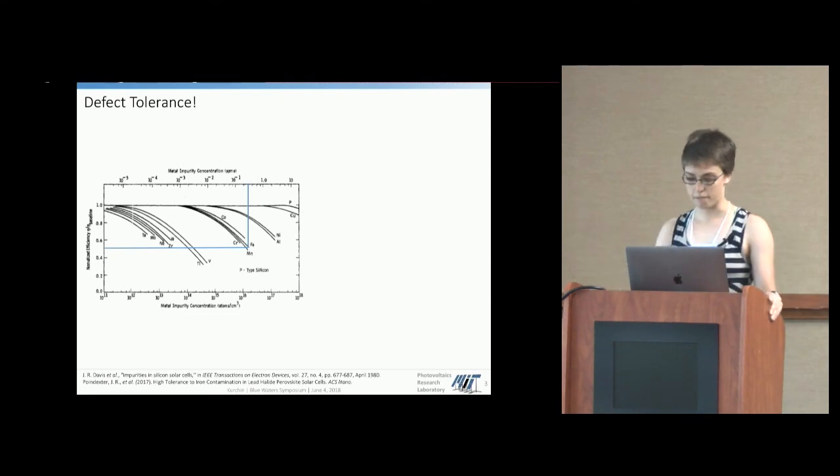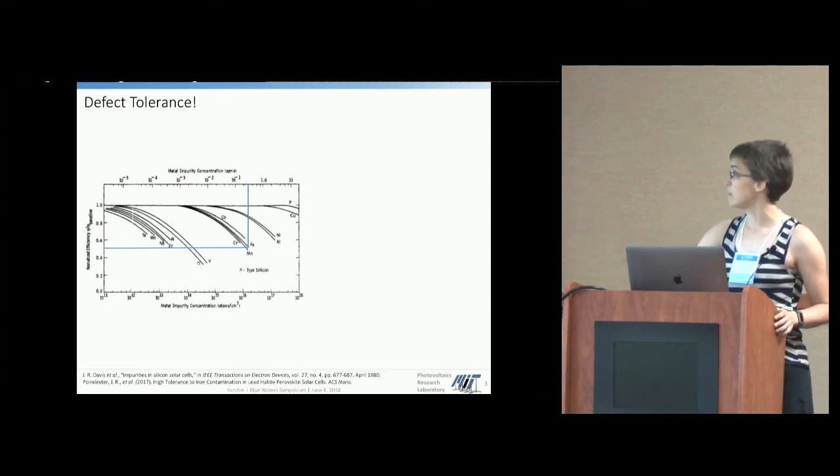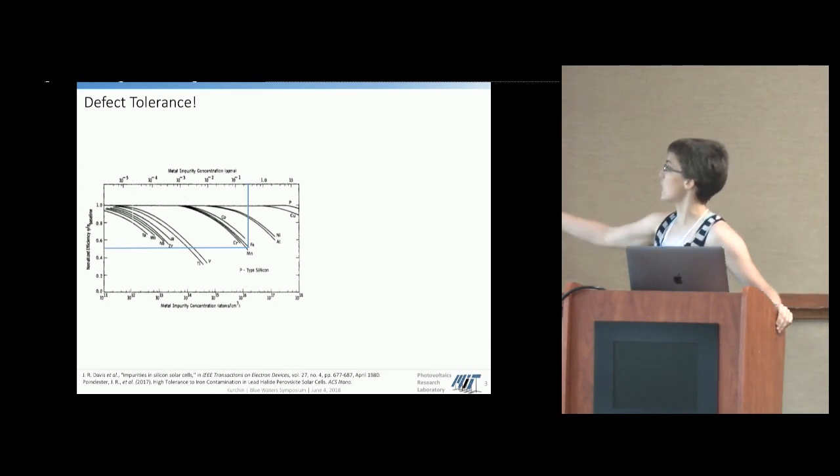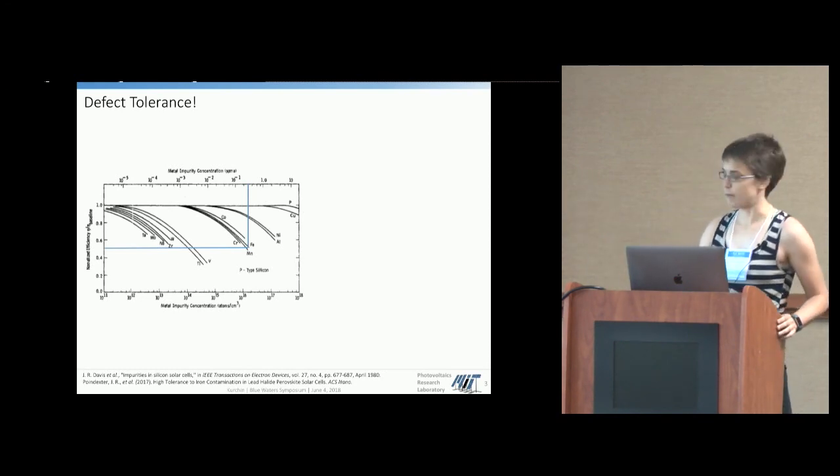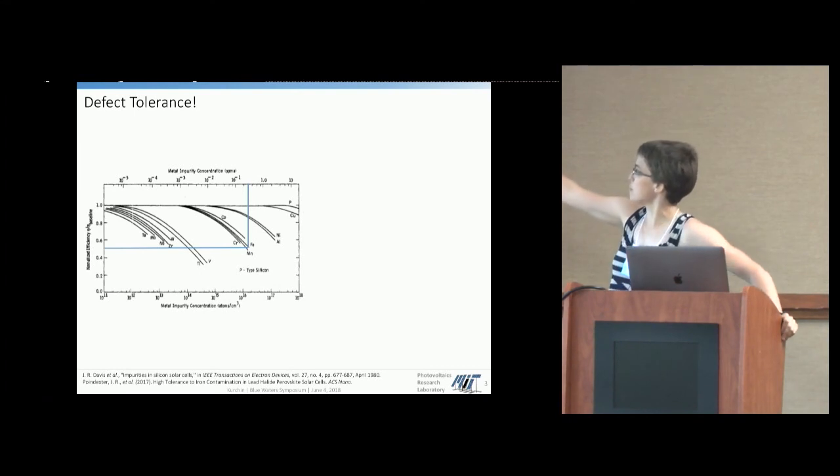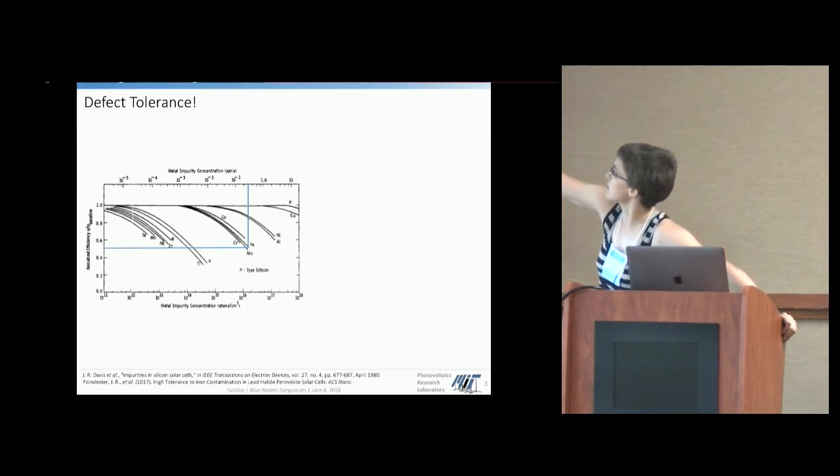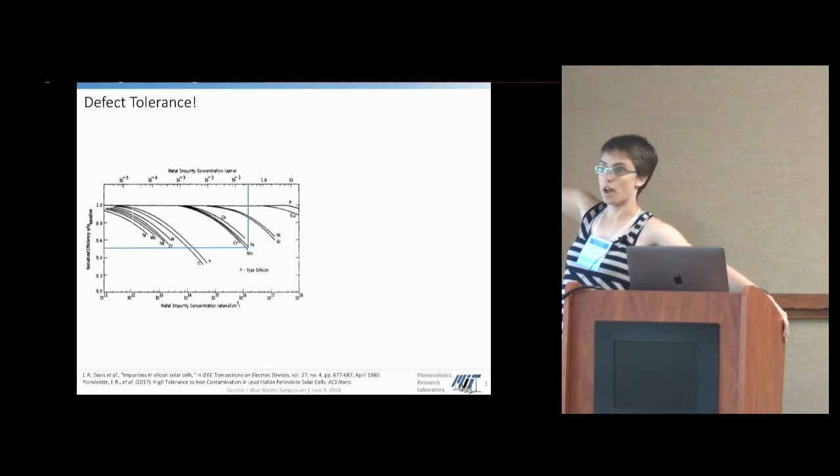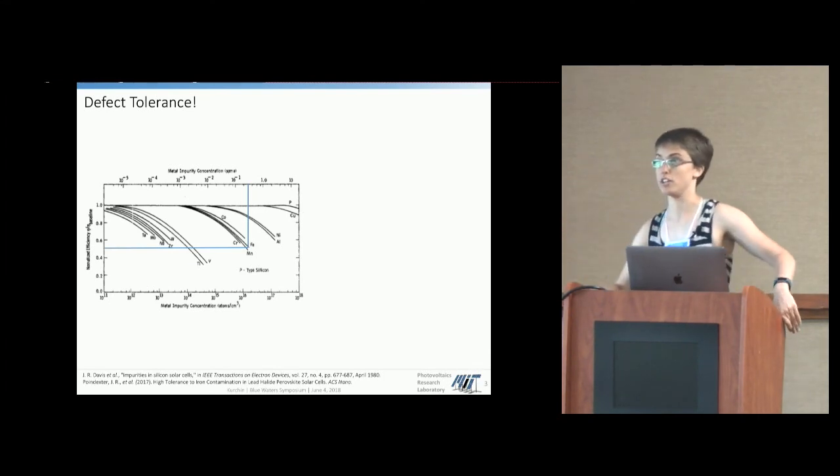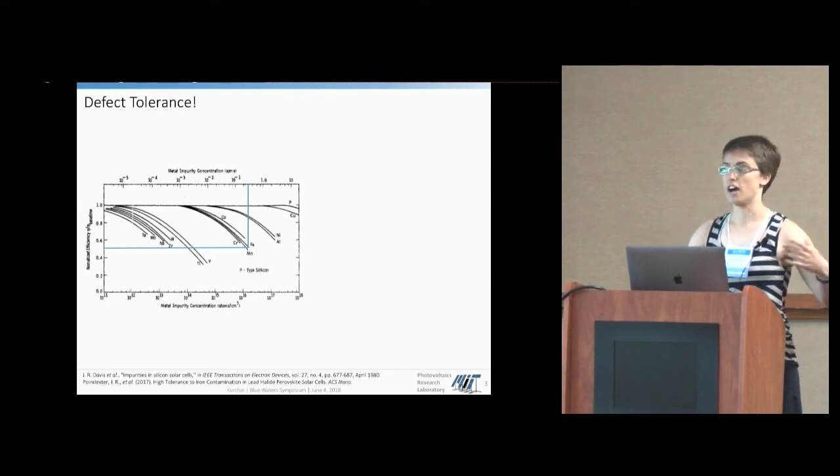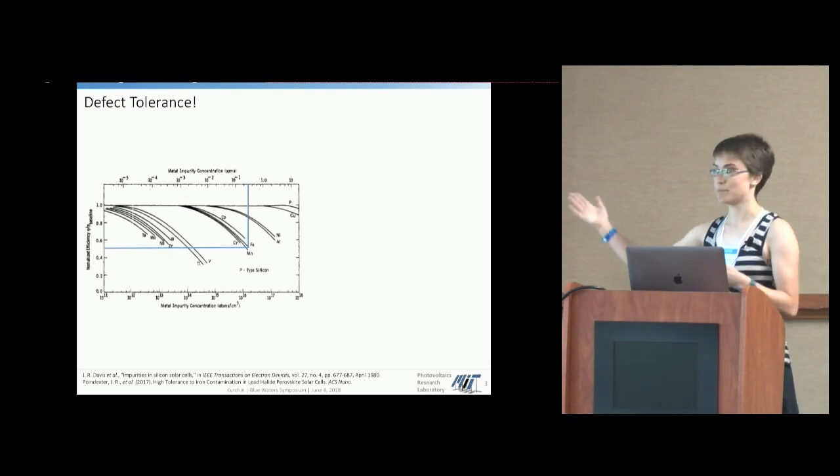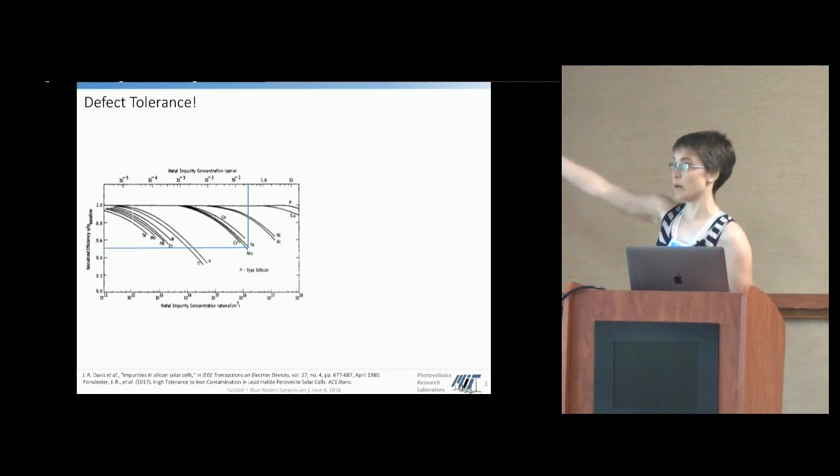So this plot on the left is actually a plot from a pretty classic paper in the silicon PV research community that charts efficiency losses versus contamination levels of various metals. And this is just one example. And so if we take iron as a specific example, you see that you get about a 50% efficiency loss. If you look at the axis on the top, it's at well under one part per million of iron contamination. And this is a big part of the reason why we need these very expensive techniques to manufacture materials like silicon, because getting them to that level of purity, and obviously they need to be more pure than that to perform well, requires a very high level of control.